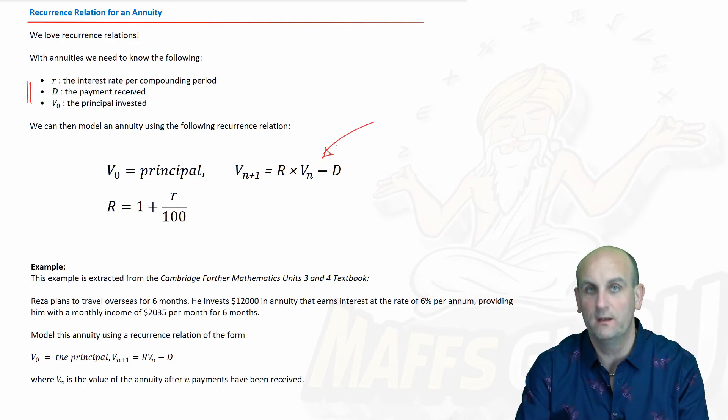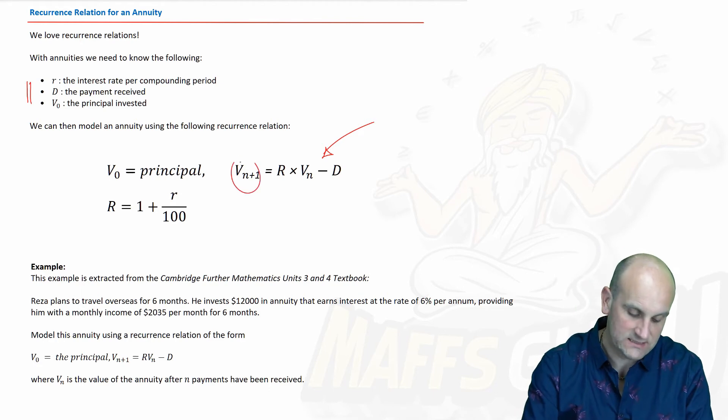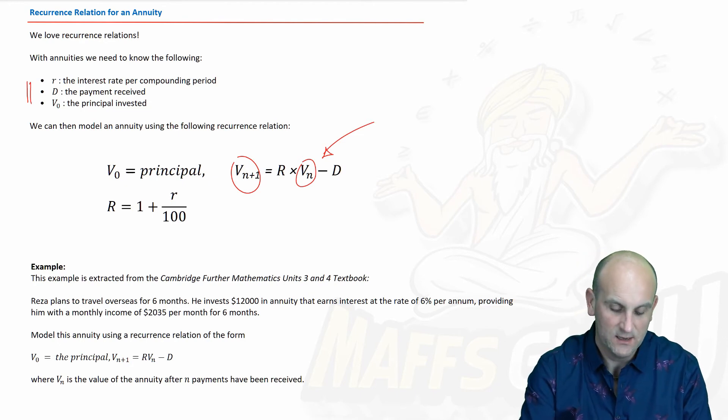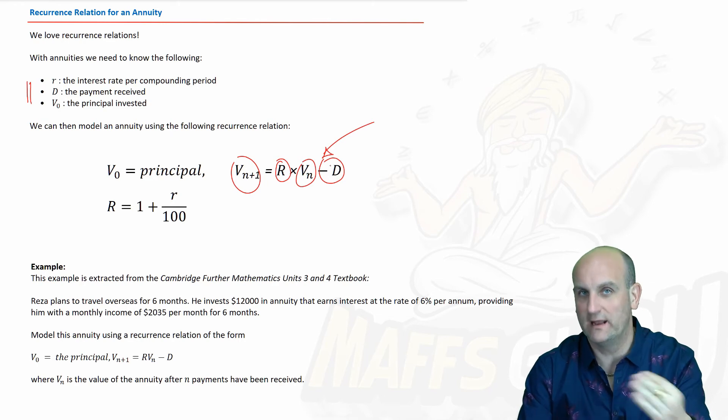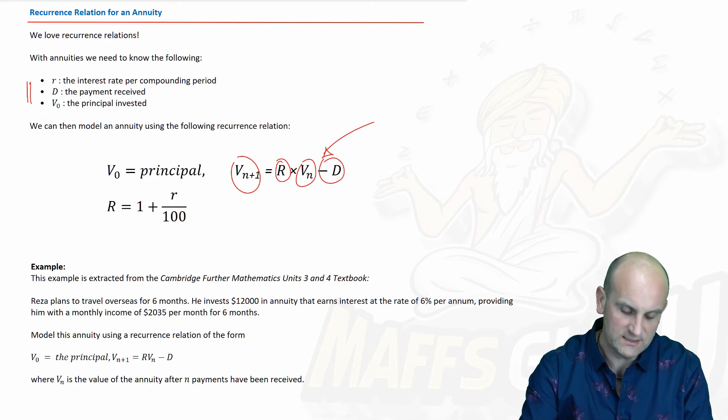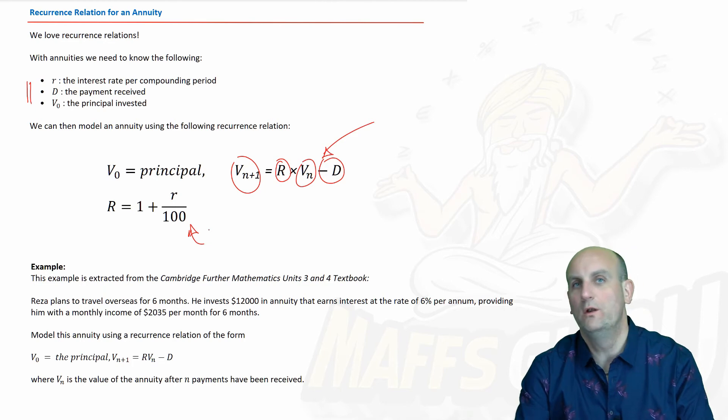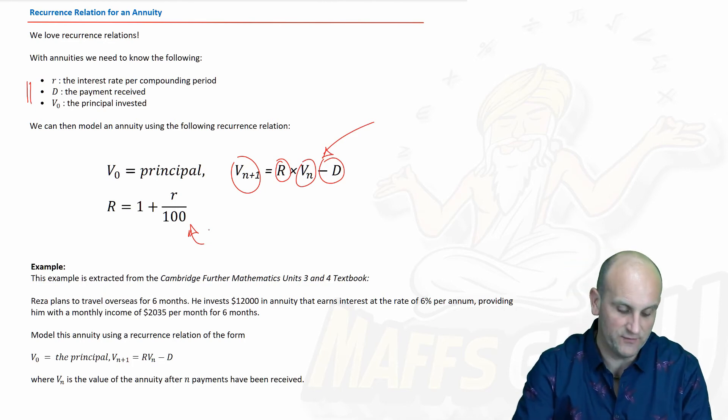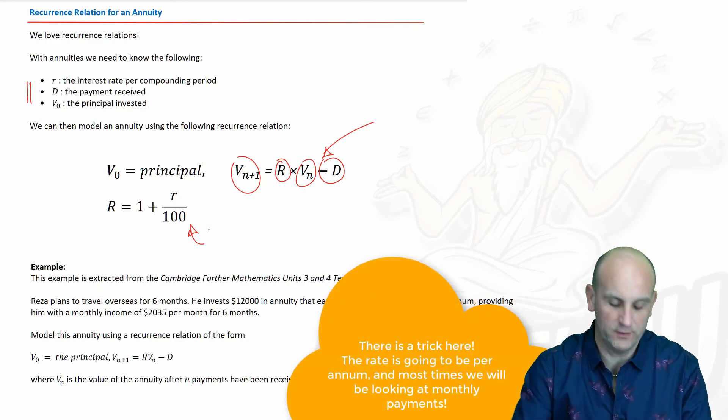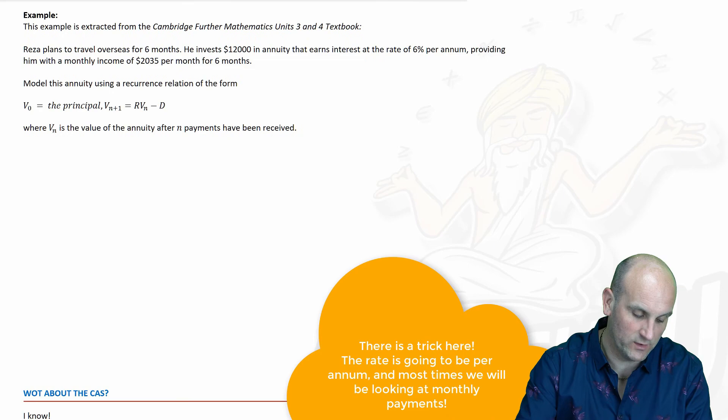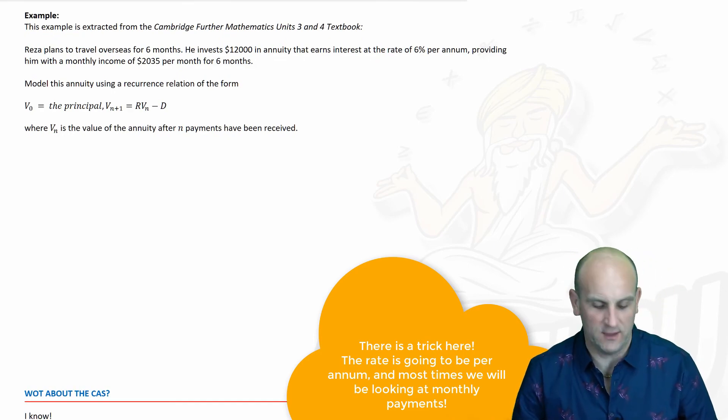And so, our recurrence relationship is given by this formula here. V0 equals the principal, and to get to my next term, remember V of N plus 1, is equal to my previous term or my current term, depending on where you sit, times some value R minus D. Now, the reason it's minus is because the bank are giving me money every single month, or I'm taking money every single month. So, we're subtracting that away from my principal. What is this value of R? Well, as is normal, we're looking at a multiplier for our rate of interest, and the value of R is given by 1 plus little r, which is the interest rate from the bank, all over 100. So, what's the best way to actually work this out? Let's do an example extracted from the Cambridge Further textbook.